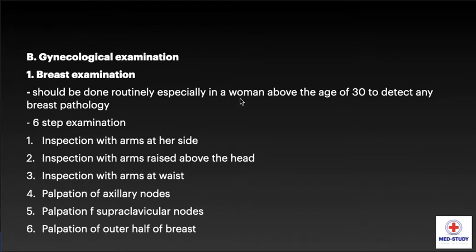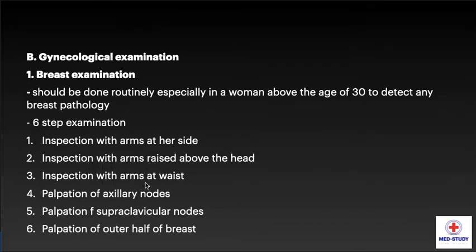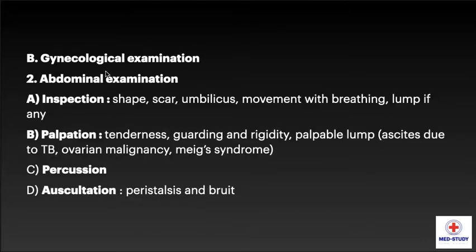Now coming to gynecological examination. The first is breast examination, which should be done routinely, especially in women above the age of 30, to detect any breast pathology. The six-step examination of the breast includes: inspection with arms at her side; inspection with arms raised above the head; inspection with arms at waist; palpation of axillary nodes; palpation of supraclavicular nodes; and palpation of the outer half of the breast.